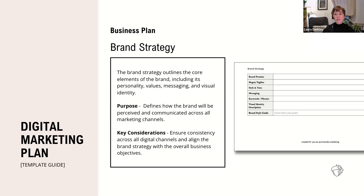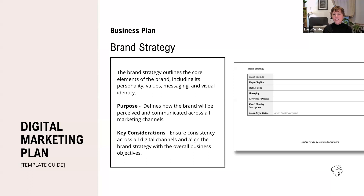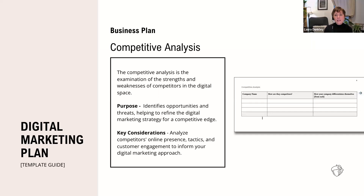Brand strategy is definitely part of your business planning process. You understand who you are as a brand — now put the details in one central place. This includes your brand promise, slogan or tagline, style and tone, key messaging, keywords and phrases, and visual identity. If you have a brand guide on Canva or in your drive, put a quick reference link here. This plan is your central operating plan, so make sure that piece is accessible.